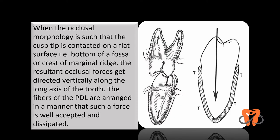The occlusal morphology we want is one where the tip of the cusp contacts a flat surface, which may be the bottom of a fossa or the crest of a marginal ridge. When this happens, the occlusal forces get directed vertically along the long axis of the tooth. The periodontal ligament fibers are arranged to tolerate this force well, so the force is easily dissipated and does not result in any bone resorption.